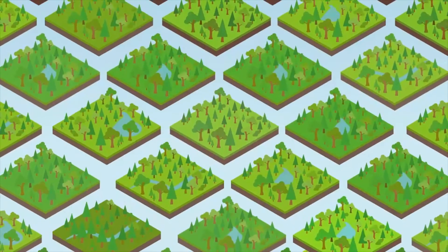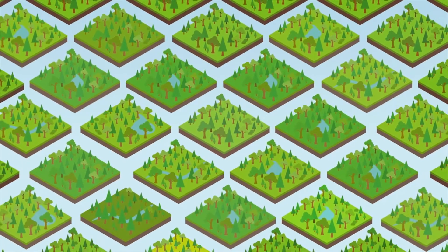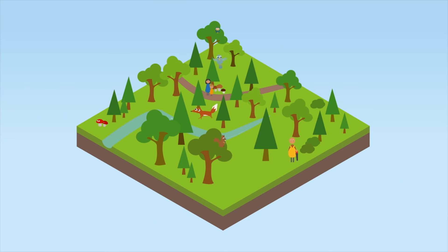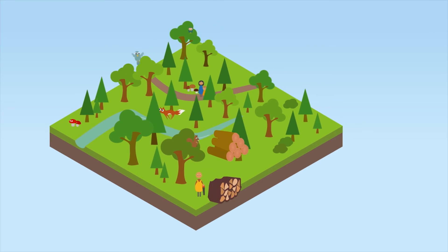With a managed forest, the picture is completely different. It makes a significantly larger contribution in terms of protecting the climate. With sustainable management practices, the forest is kept in the phase of maximum growth. This means that the managed forest continuously absorbs CO2 from the atmosphere.